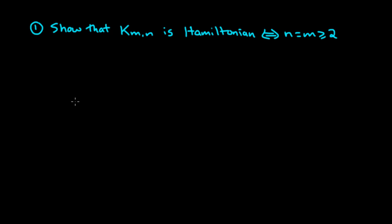In the last video on Hamilton graphs, I finished by asking you to solve three problems. So in this video I'd like to go over some solutions to these problems. Remember that a graph is Hamiltonian if it has a Hamilton cycle, which is a cycle that touches every vertex of the graph.